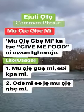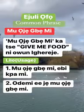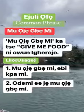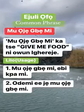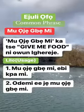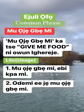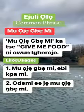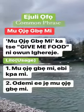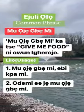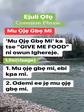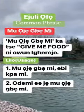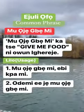When you read it separately, the sound tends to change a bit: Mu oje gbe mi. Mu oje gbe mi kashi — give me food in English. Lilo: Mu oje gbe mi e bikwa mi. Ode mi e je mu oje gbe mi. See you next time.